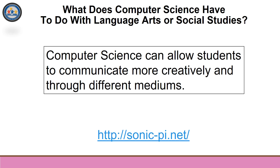So what does computer science have to do with language arts or social studies? Computer science can allow students to communicate more creatively and through different mediums. Students could discuss natural language processing — things like Siri, Alexa, and Cortana are examples — and how not only have they revolutionized human-computer interaction, but what the future of those actually is. They could then conceive and design, at least on paper, what the next generation of these would look like and what they can do, how they can help, and maybe how they could help teach.